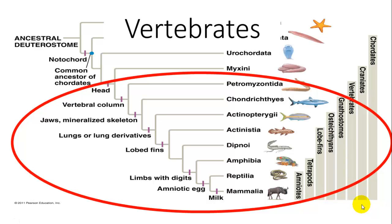Now we're getting into the more relevant type of animals, at least in relation to human research. A lot of time is spent studying vertebrates because while they are generally larger, they have a large presence in their environments. Studies that we do on vertebrates often translate well into human application, whether it be health, ecosystem, or environmental. We're going to go through the different groups within the vertebrates, including this phylogeny.